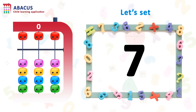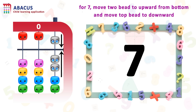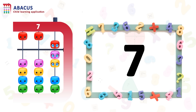On the bottom we have 4 beads, each with a value of 1. And on the top, 1 bead with a value of 5. So for 7, we have to move 2 beads upward from the bottom and move the top bead downward from the top on rod 1. And we got the number 7. It's easy, right?